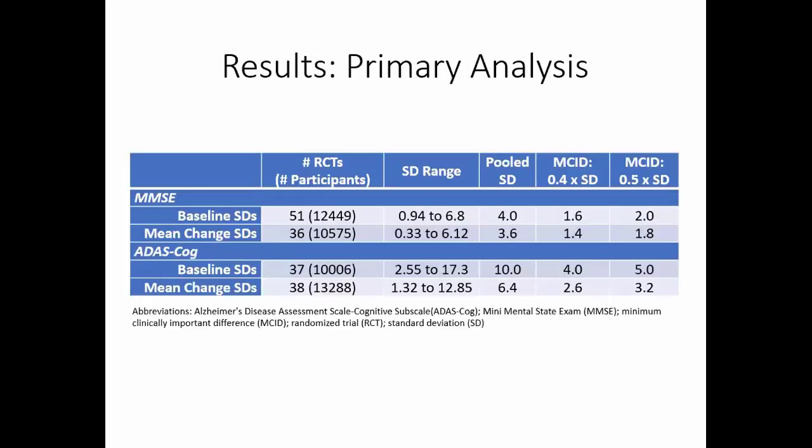So in our primary analysis, these were our results. I'll walk you through the table from left to right. The second column is the number of randomized trials and number of participants in each analysis. The next column is the range of standard deviation values reported in the included studies. Then the calculated pooled standard deviation, followed by the MCID values derived at 0.4 or 0.5 standard deviations. We derived separate values pooling the baseline standard deviations versus pooling the mean change standard deviations. When we used the baseline standard deviations, the values are slightly higher than when we used the mean change.